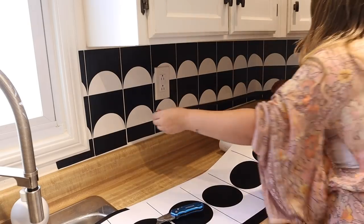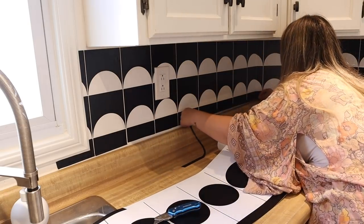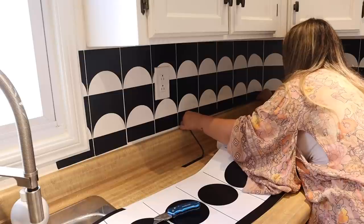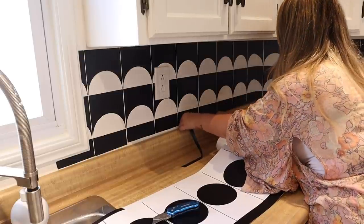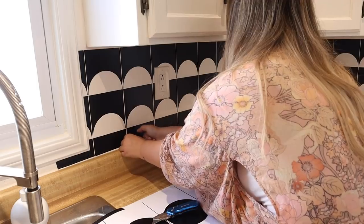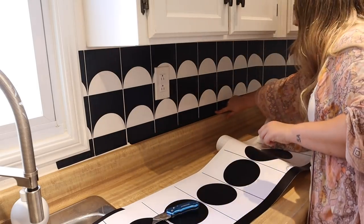Something that really bugged me was this white grout line, so I took some of the excess black vinyl that I had and sort of made my own grout with it. I think that this really just tied the look together and made it look really crisp. I'm so glad I did that.